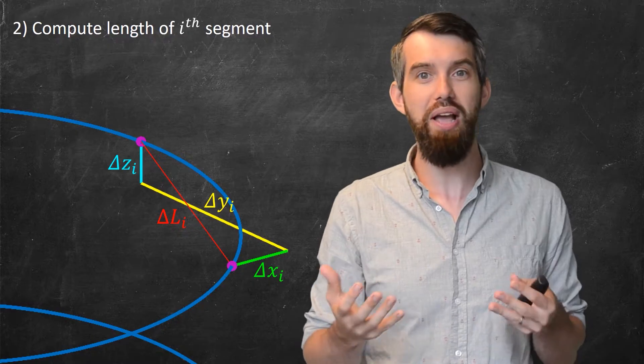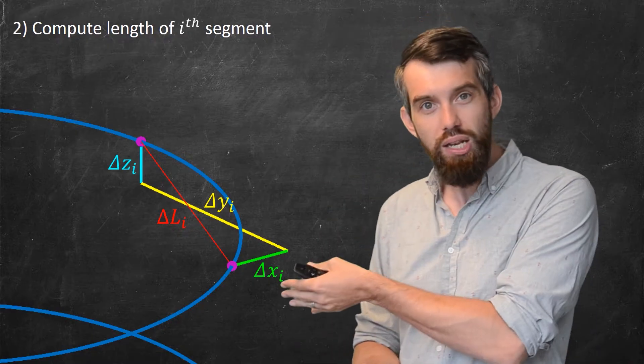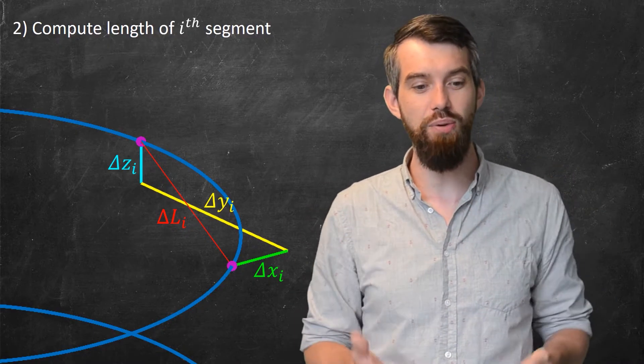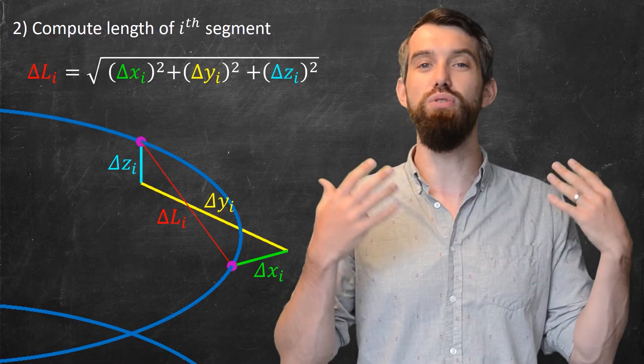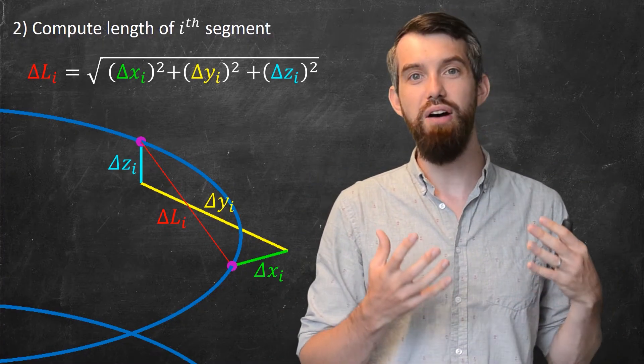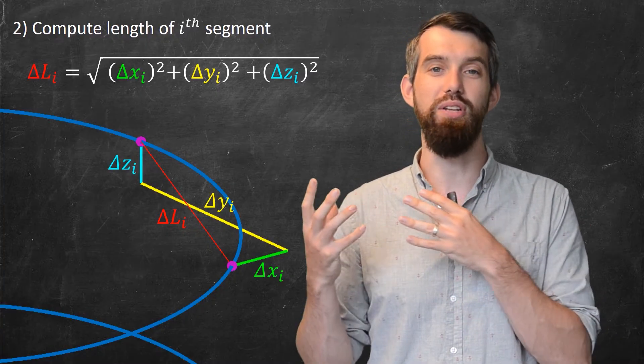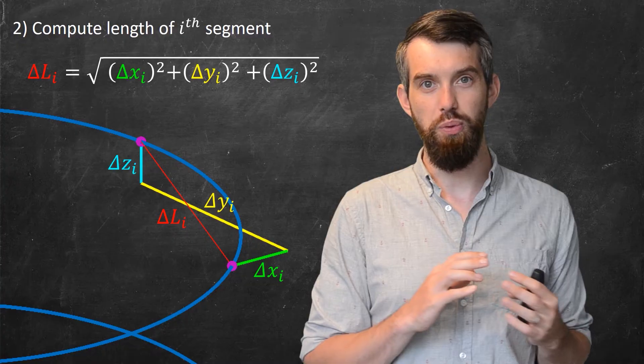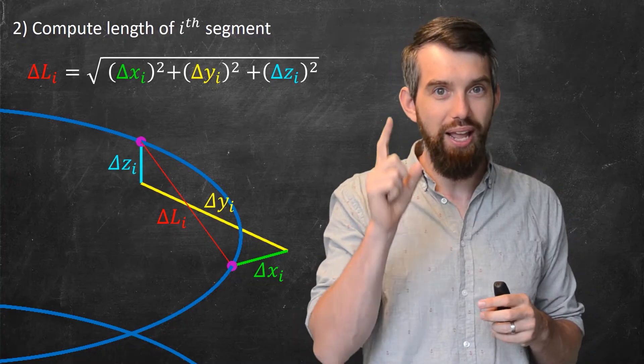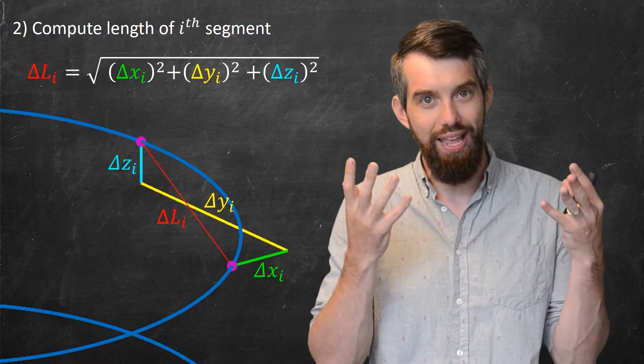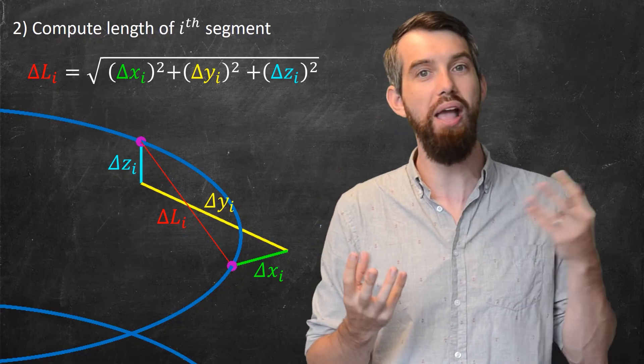But now I can say what the length of the straight line is, that's just a Pythagorean formula. Namely, the delta Li is equal to the square root of the delta xi squared plus the delta yi squared plus the delta zi squared. So we've zoomed in on the generic i-segment here. We've figured out what its length is in terms of x, y, and z.